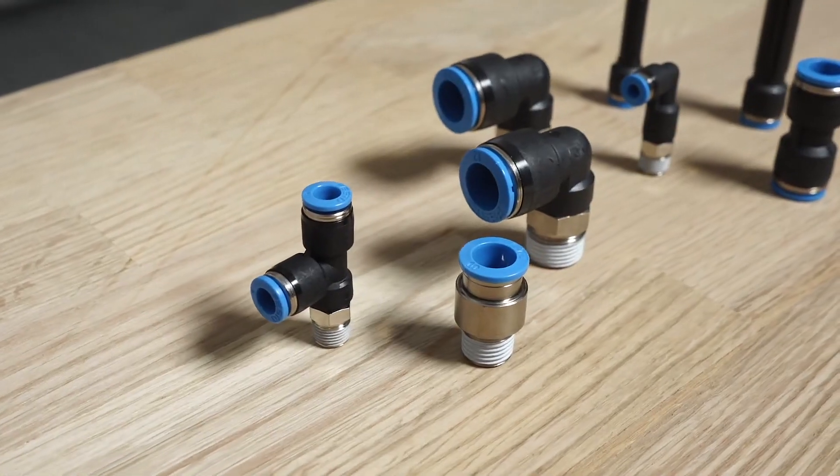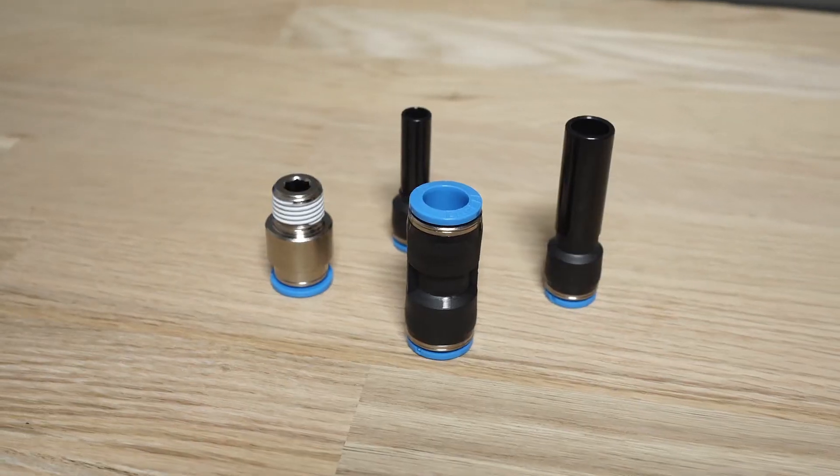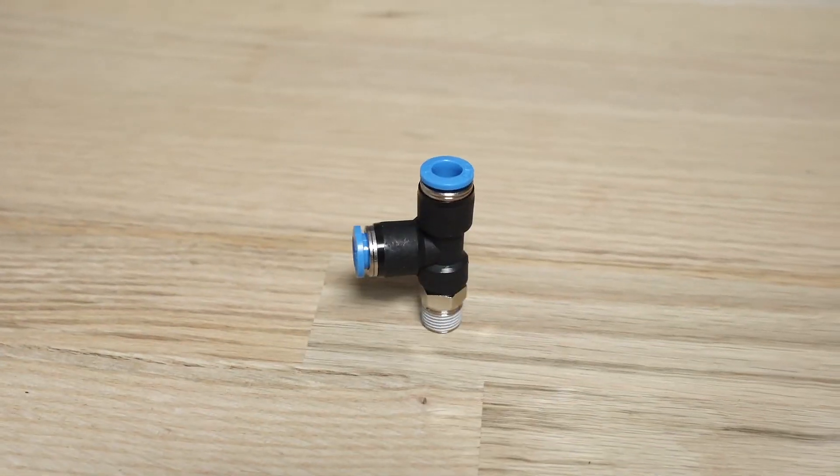Our offer includes different versions of Festo push-in fittings such as straight, Y-shaped, T-shaped, angled and various sizes ranging from 3 millimeters up to 16 millimeters.